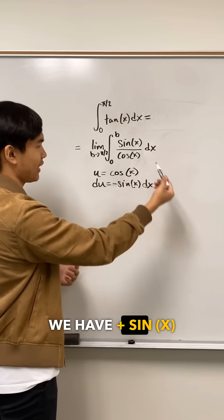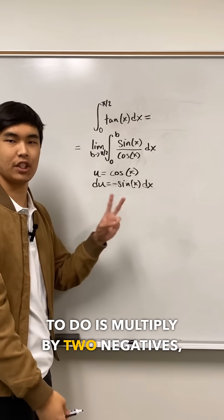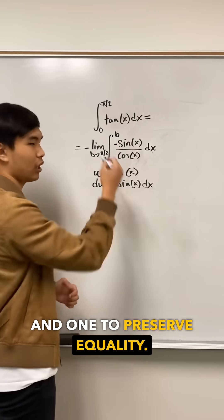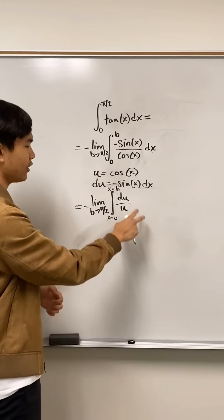In the integral, we have positive sine x dx. So what I have to do is multiply by two negatives, one that we're going to use and one to preserve equality. So this integral turns into the integral of du over u.